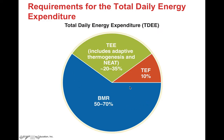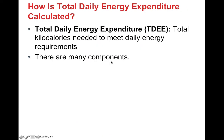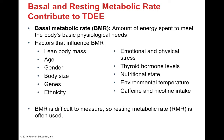50 to 70% of your daily energy expenditure is your basal metabolic rate, just taking care of all your basic metabolic functions. TDEE is the total amount of kilocalories you need to meet your daily energy requirements, and it has multiple components. The basal metabolic rate covers energy needed for basic physiological needs, and several factors can influence it: lean body mass, age, gender, body size, genetics, ethnicity, levels of emotional and physical stress, nutritional state, thyroid hormone levels, environmental temperature, and caffeine and nicotine intake. Basal metabolic rate can be difficult to measure because it changes throughout the day, so your resting metabolic rate, or RMR, is often used instead.